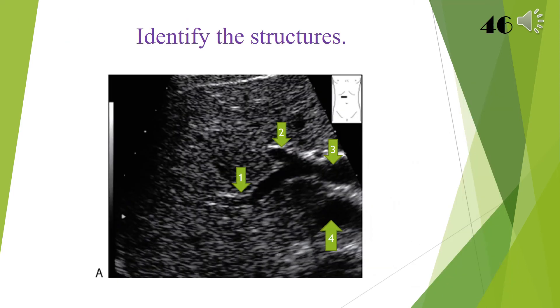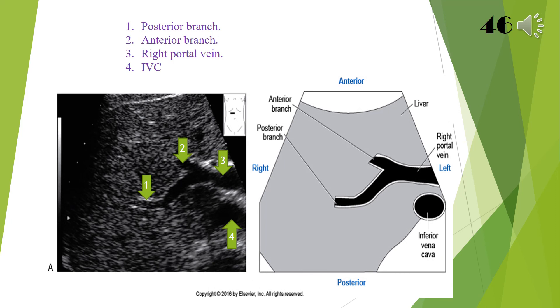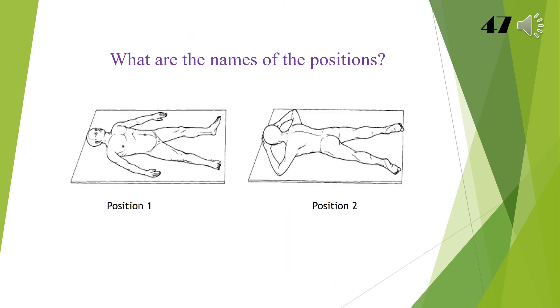Identify these structures: 1 posterior branch, 2 anterior branch, 3 right portal vein, 4 IVC.